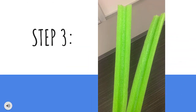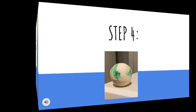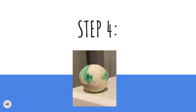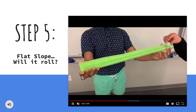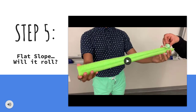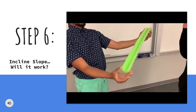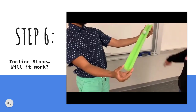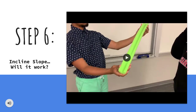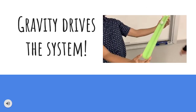Step three: this is how the pool noodle will look to carry out the demonstration. Step four: make a ball using Play-Doh or clay. Step five: hold the pool noodle flat and check to see if the ball will roll. Step six: now hold the pool noodle at a slope and check to see if the ball will roll. Now that we have tested how slope and gravity allow water to travel downstream, we will now explain gravity a little more.